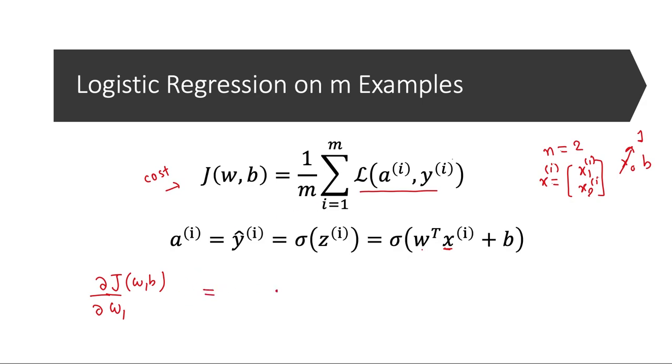We will be calculating del j, which is a function of w and b, over del wi. We will be working with n equal to 2, that is two features. So we will calculate this as 1 over m, i equal to 1 to m, and then del over del wi of the loss of ith predicted value and ith actual value. We will do this for all the w's and also b. Let's begin. We will run a loop from 1 to m. Here m denotes the number of training examples, so we loop from 1 to m and keep accumulating these values.